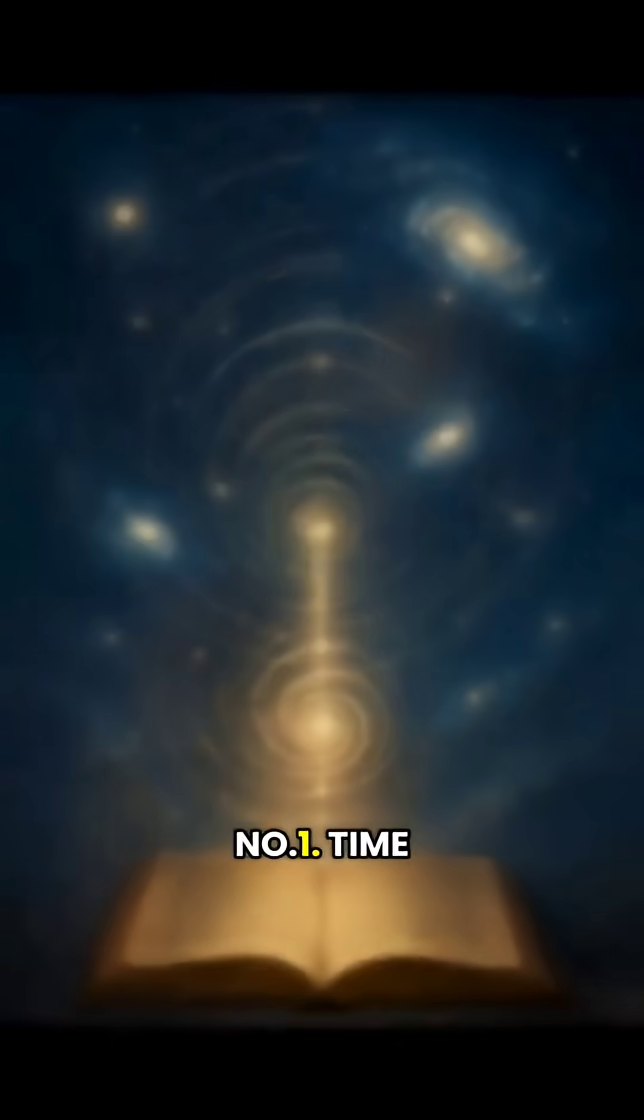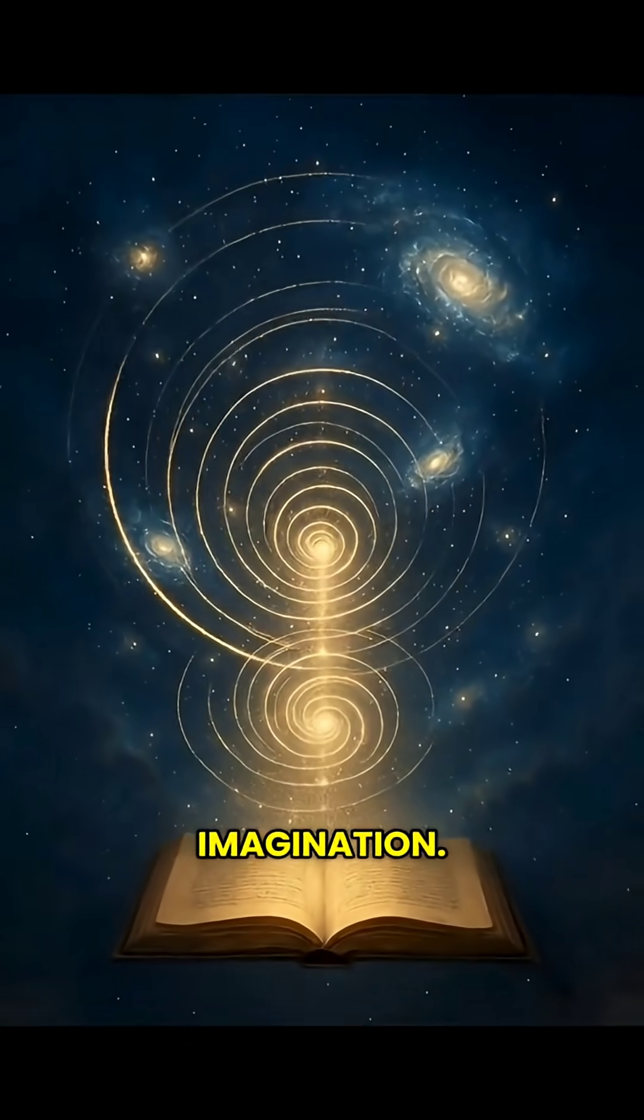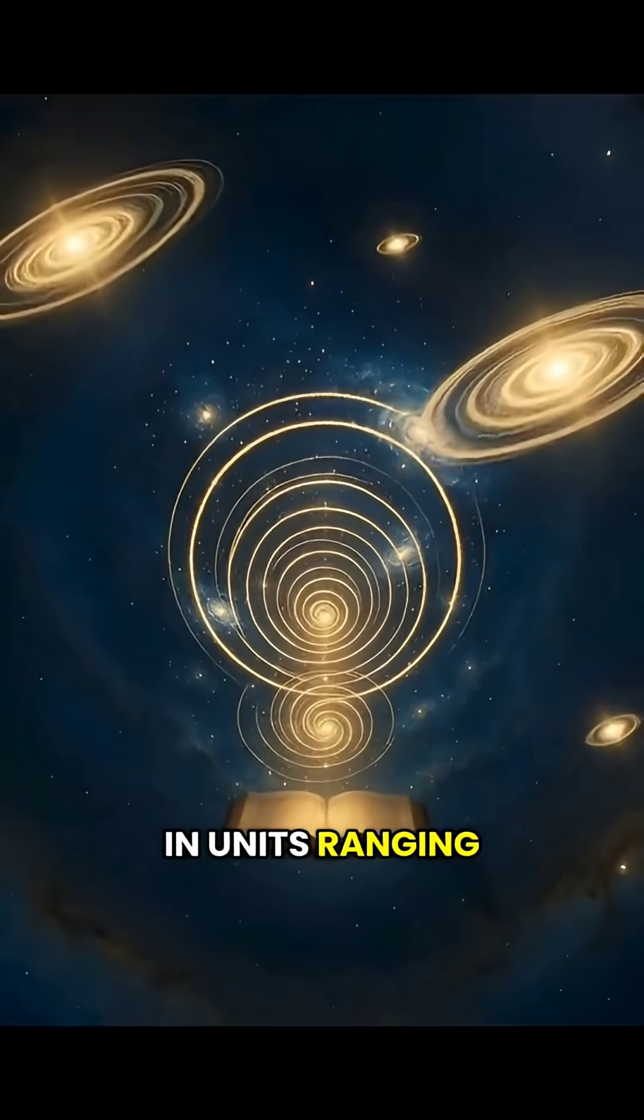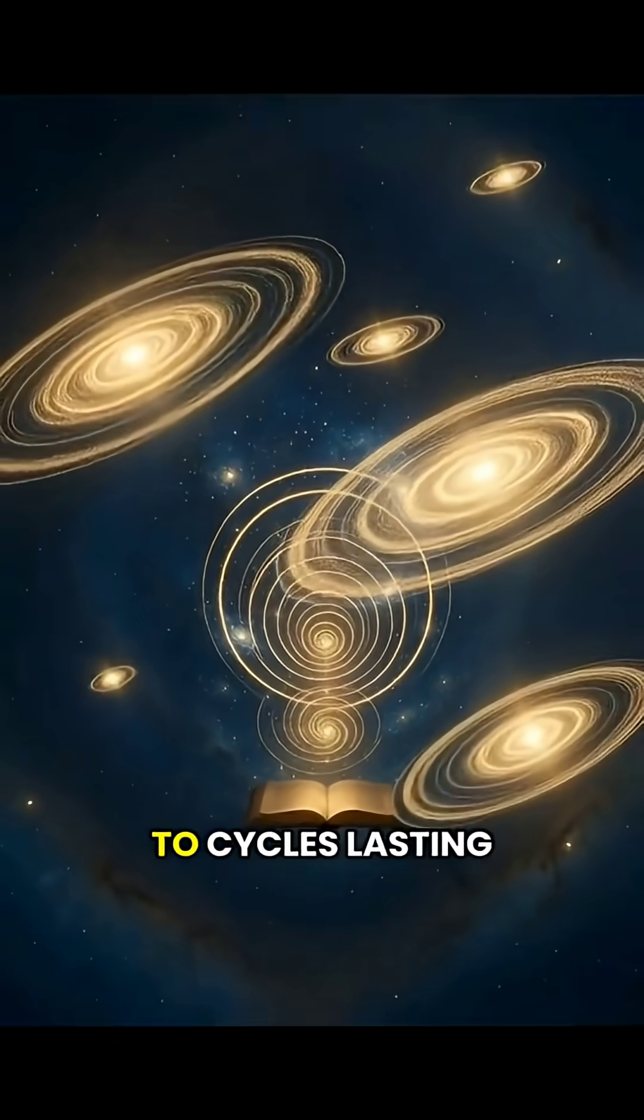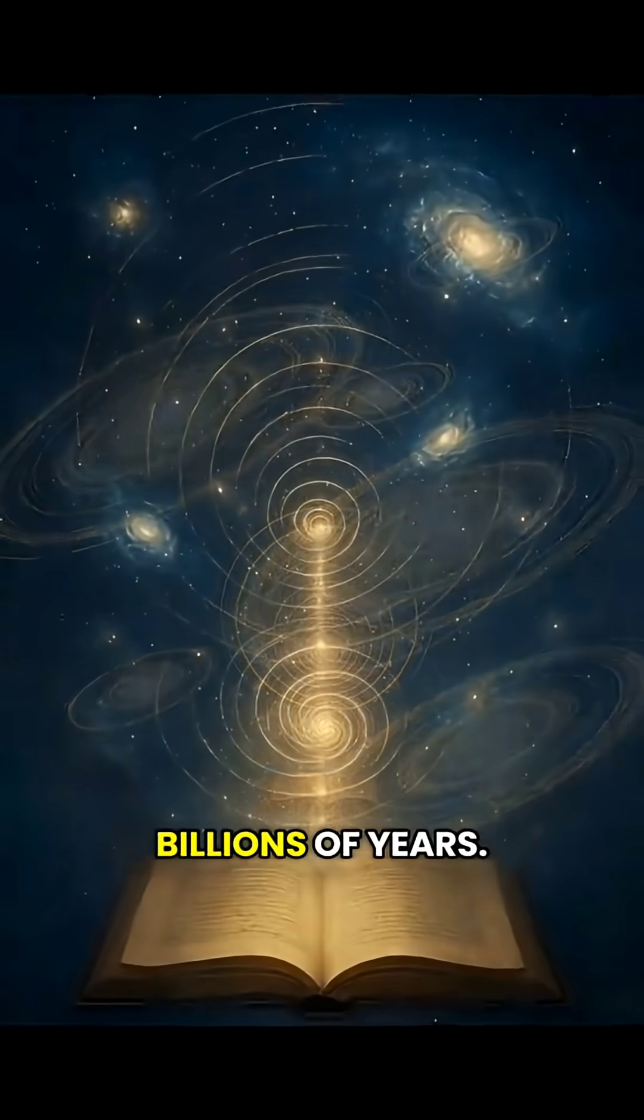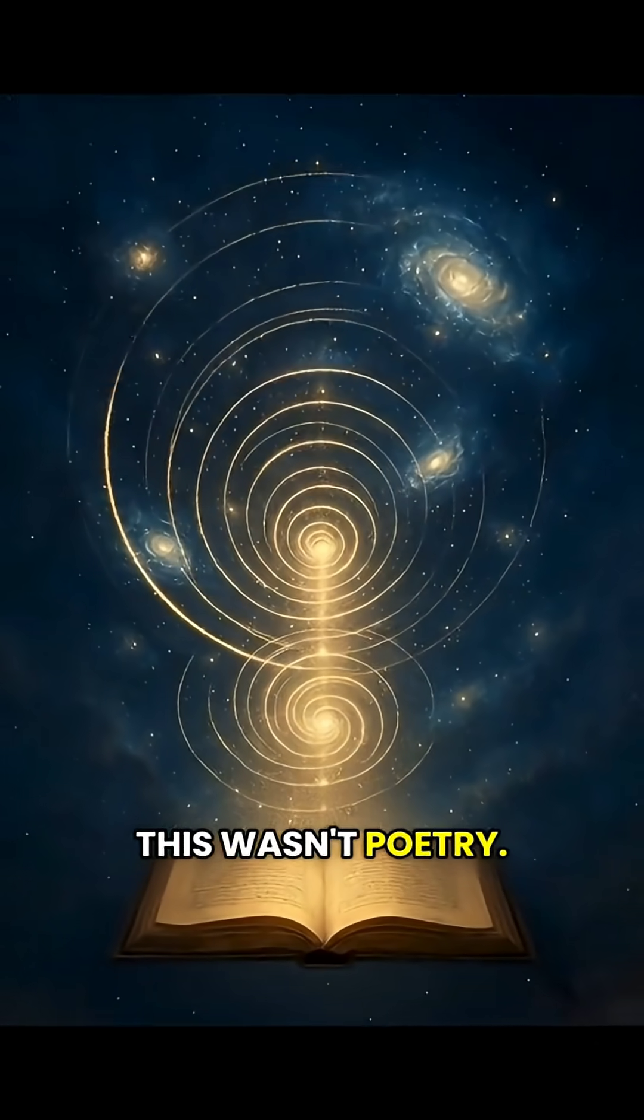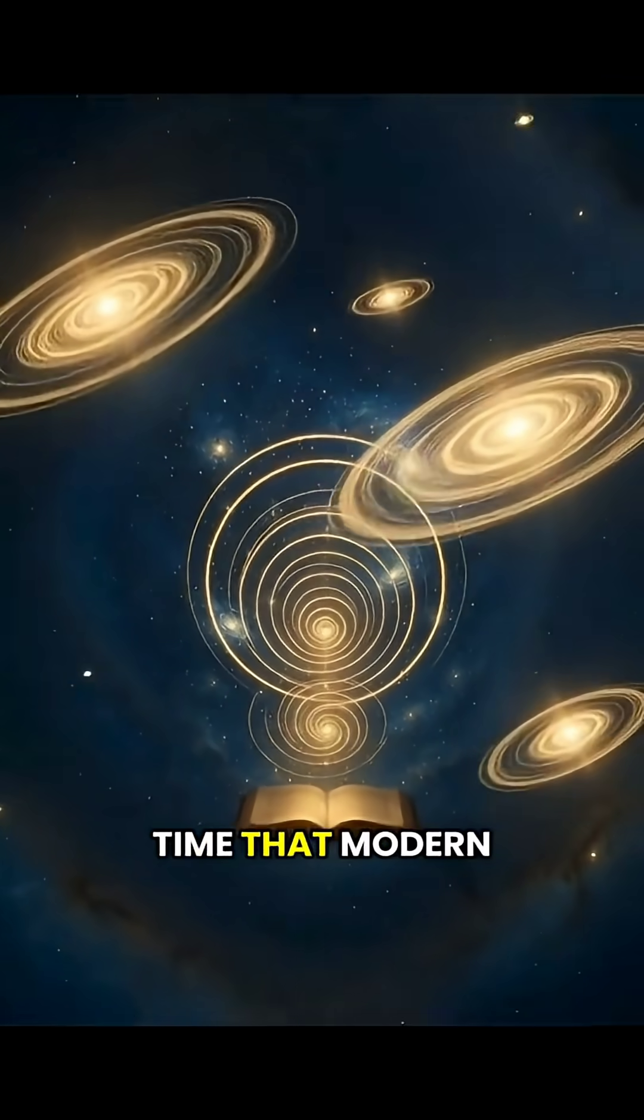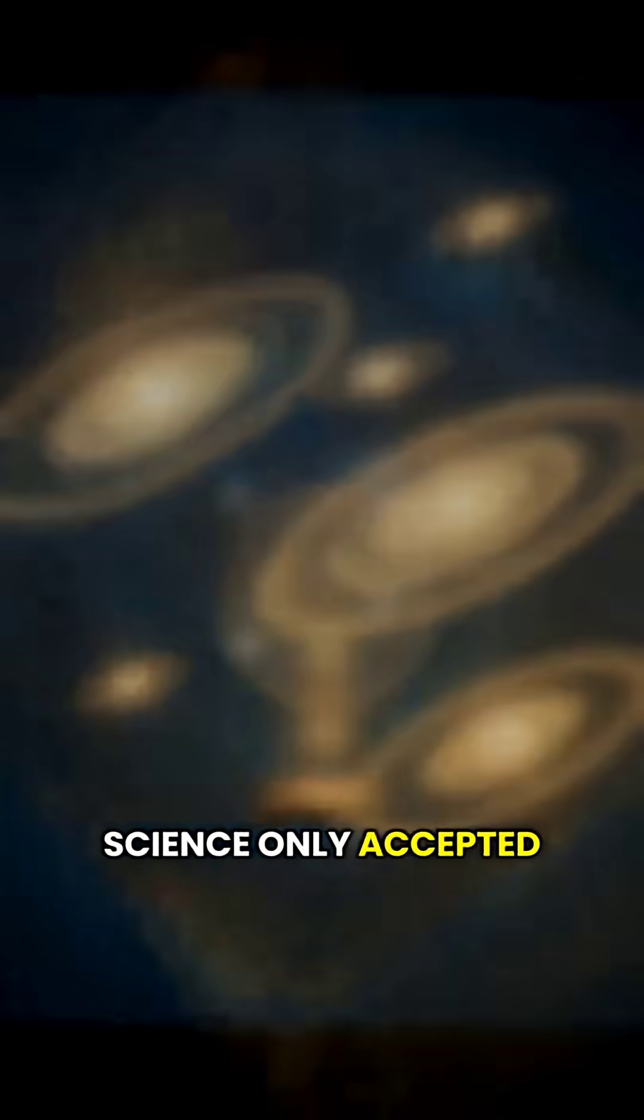Number one, time measured beyond human imagination. Ancient Indian scholars described time in units ranging from fractions of seconds to cycles lasting billions of years. This wasn't poetry, it was philosophical cosmology. A scale of time that modern science only accepted recently.